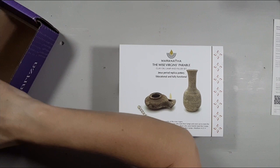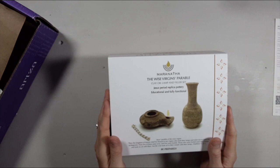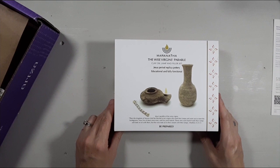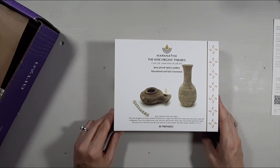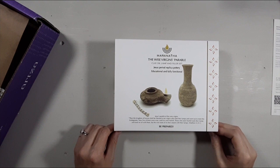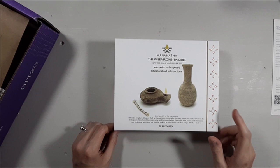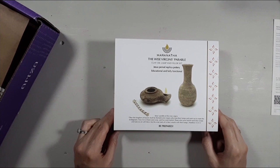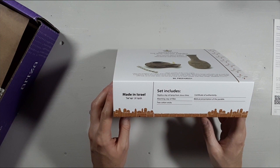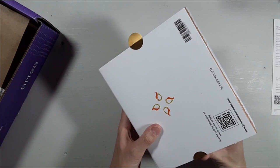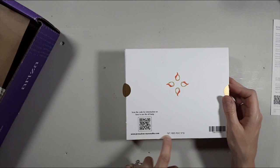This is Maranatha, the wise virgins parable, clay oil lamp and filler set. Jesus period replica pottery, educational and fully functional. Cool. Jesus' parable of the wise virgins: Then the kingdom of heaven shall be likened to ten virgins who took their lamps and went out to meet the bridegroom. Now five of them were wise and five were foolish. Those who were foolish took their lamps and took no oil with them. But the wise took oil in their vessels with their lamps. Matthew 25:1. Be prepared. Made in Israel. Set includes replica clay oil lamp from Jesus' time, matching clay oil filler, and two cotton wicks. Certificate of authenticity and biblical presentation of the parable. Well that's cool. This is a nice little box. Scan the code for information on how to use the oil lamp.